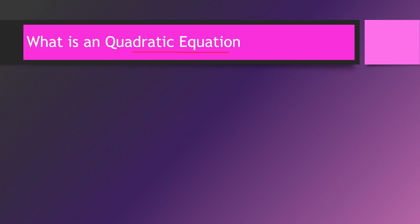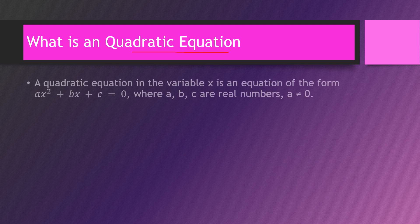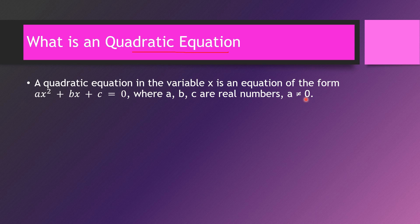A quadratic equation in the variable x — it can be any variable — is of the form ax squared plus bx plus c equals 0, where a, b, c are real numbers and a cannot be 0. Such an equation is called a quadratic equation.